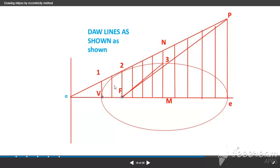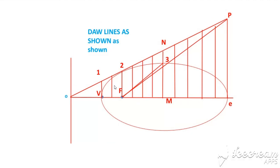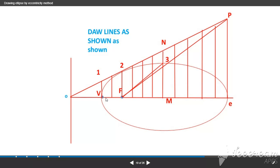Draw the lines as shown. Instead of directly drawing the curve, you can take 1cm distance or divide this VE distance into 12 equal parts.